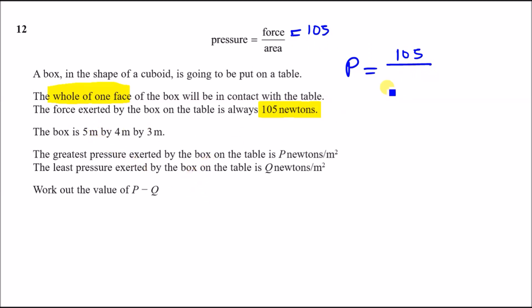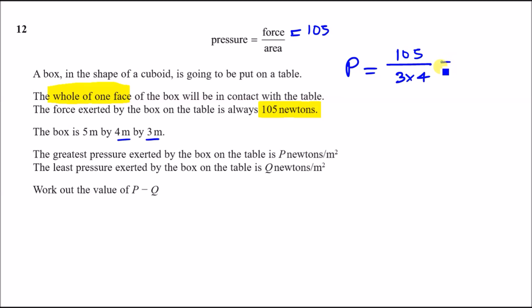For greatest pressure p: use the smallest face area, which is 3 × 4 = 12. So p = 105 ÷ 12 = 8.75 N/m². A big numerator divided by a small denominator gives the largest result.